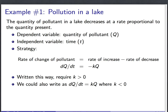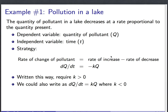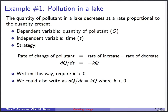So let's go through some examples. First: pollutant in a lake. The quantity of pollutant in a lake decreases at a rate proportional to the quantity present. The dependent variable is the quantity of pollutant — we'll call that Q. The independent variable is time. Our strategy is to write on the left-hand side the rate of change of the quantity of pollutant, which is dQ/dt.